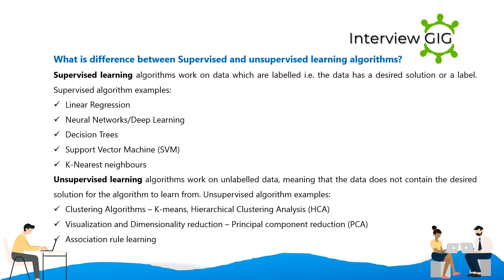What is the difference between supervised and unsupervised learning algorithms? Supervised learning algorithms work on data which are labeled — that is, the data has a desired solution or label. Supervised algorithm examples include linear regression, neural networks, deep learning, decision trees, support vector machines (SVM), and K-nearest neighbors.